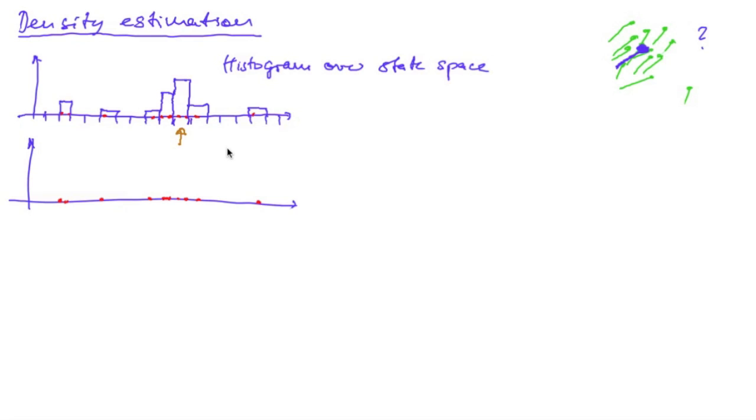We also get a more smooth result if we use a method called kernel density estimation, where we place a kernel on top of each particle, and adding those up, we get an estimate of the overall density, which is more or less smooth based on the width of the kernel that we selected.